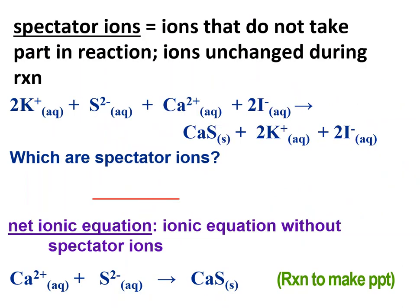So here's the definition of spectator ions: they are ions that do not do anything in the chemical reaction. They do not form new bonds. They remain unchanged, and so our potassium, it's the same before and after the arrow, and our iodide, again the same before and after the reaction. Those are spectator ions.